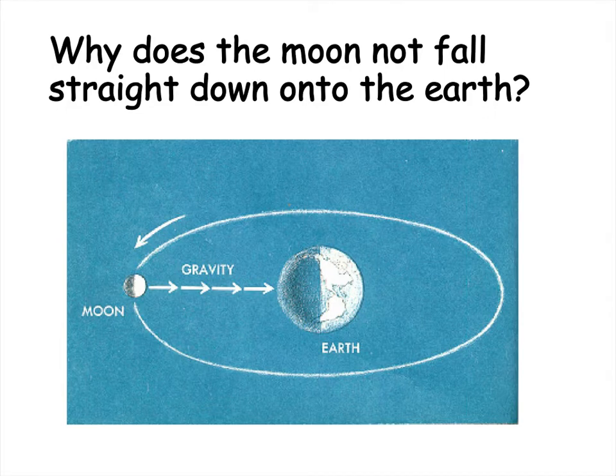Why exactly does the moon not fall straight down onto the earth? Well, because of gravity, because of the law of universal gravitation. The earth is exerting a force of gravity on the moon, and the moon in return is exerting a force of gravity on the earth. So they are counterbalancing each other, keeping each other at a specific distance away.